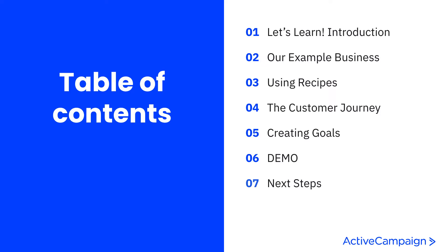Today we're going to talk about Automations Part Two. We'll cover our example business, how you can use different recipes and which ones you should look at, the customer journey and using automations to create tailored customer experiences, creating goals and how you can use those to take contacts to certain pathways in your automations. We'll demo all of these things and then close with some next steps. Make sure to hit that subscribe button on our YouTube channel.